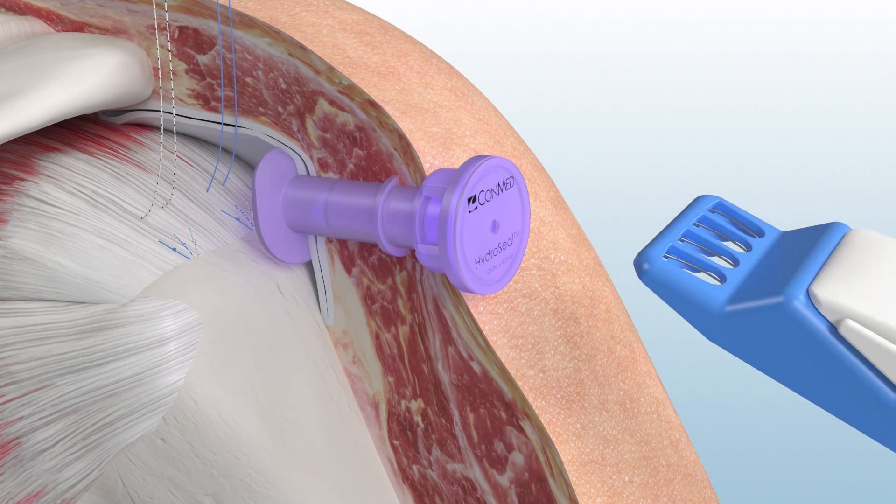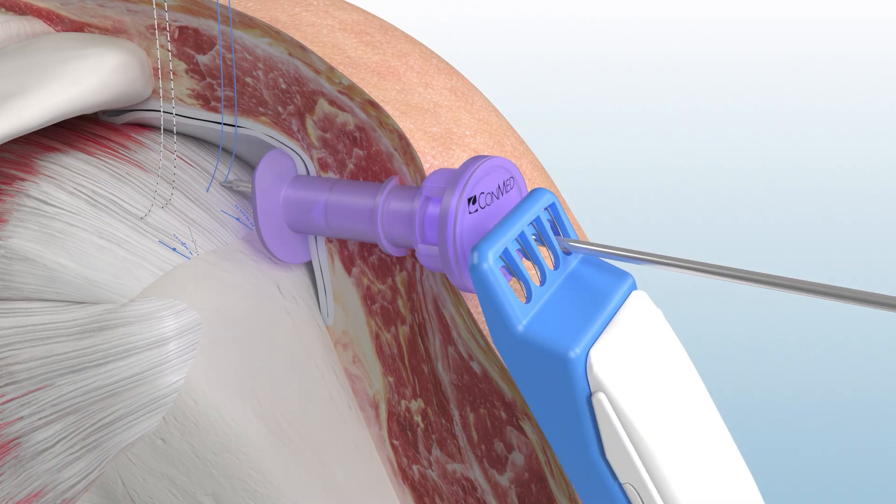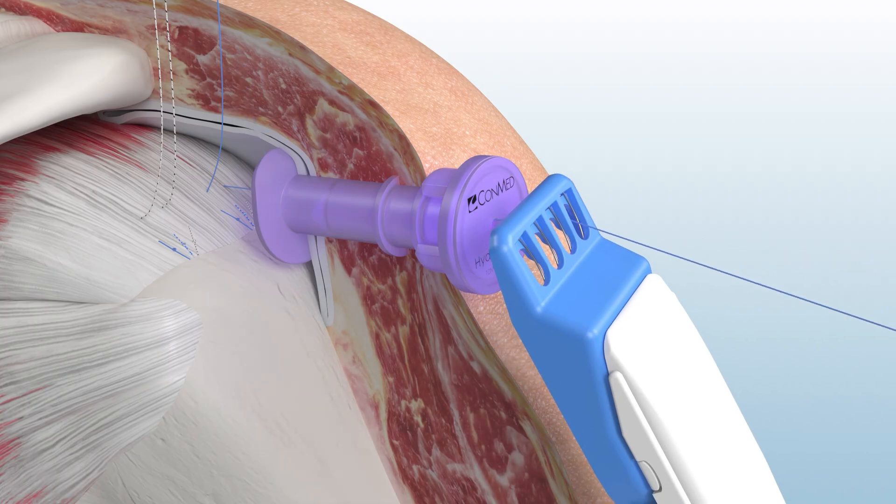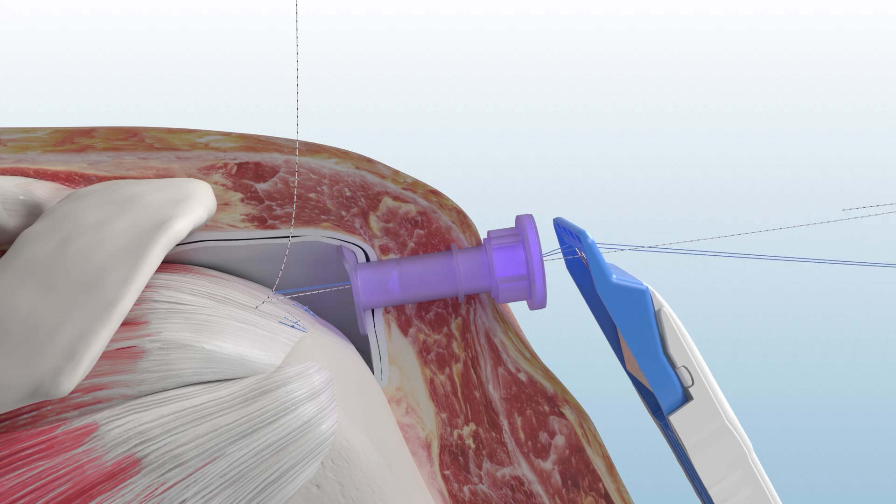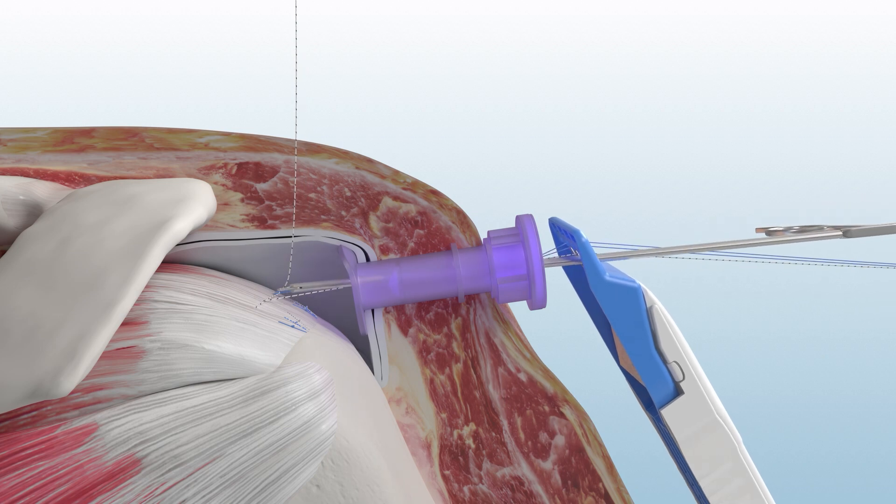Now, align the integrated suture organizer of the Biobrace RC delivery system with the lateral cannula. Using a ring grasper, load each suture, one by one, through its dedicated hole in the suture organizer.